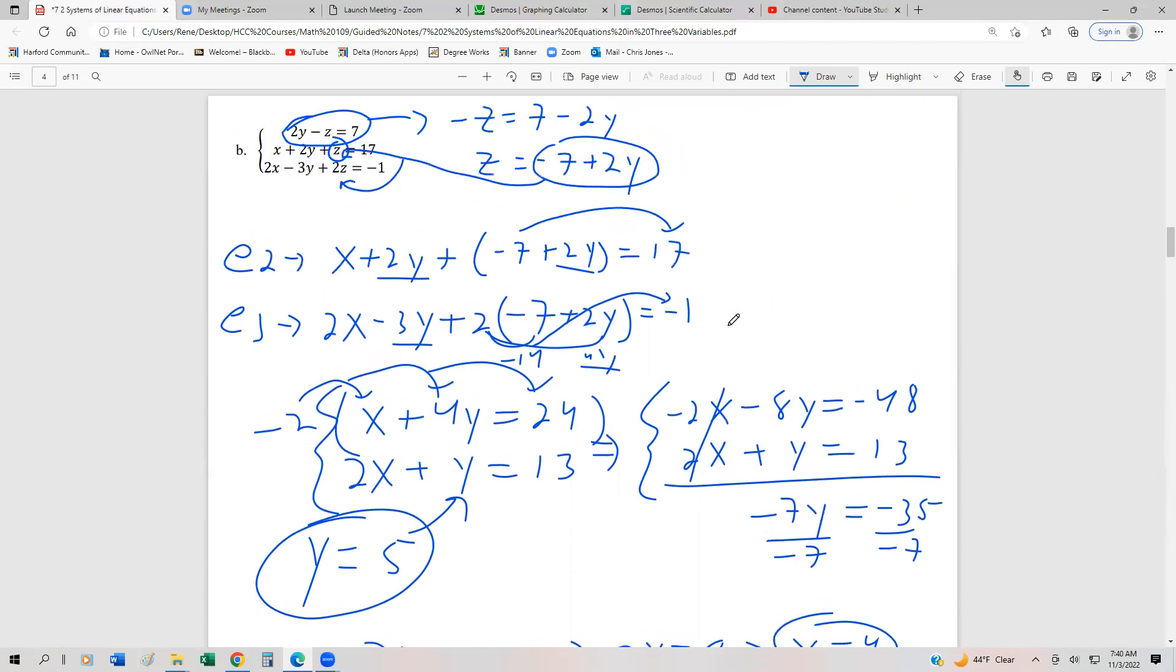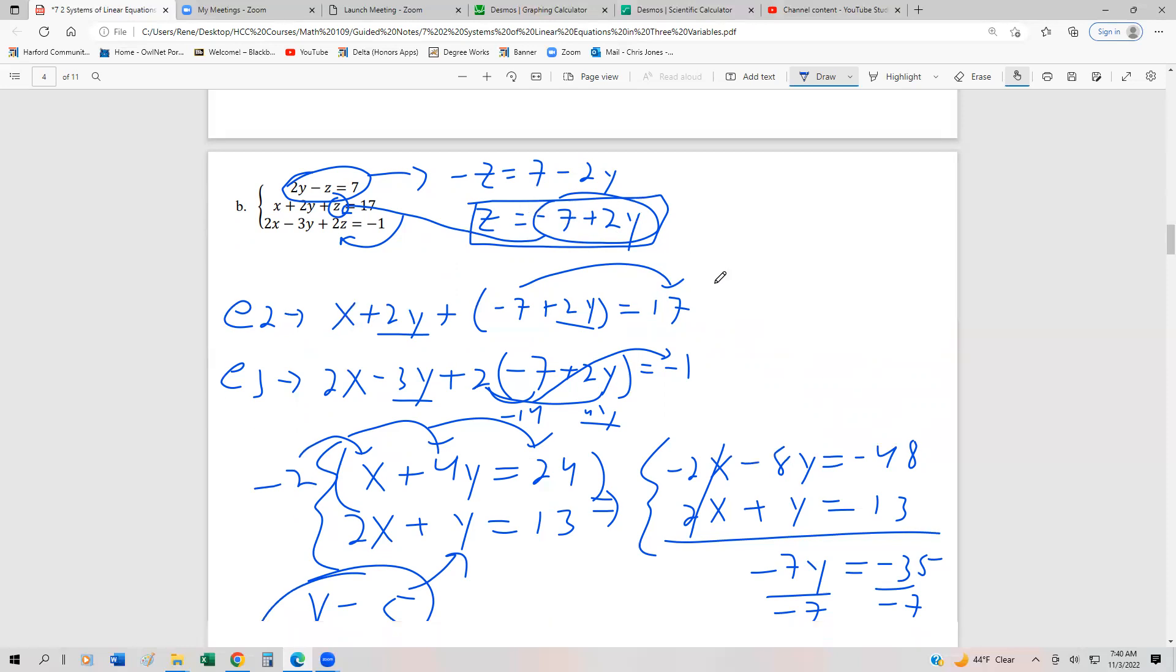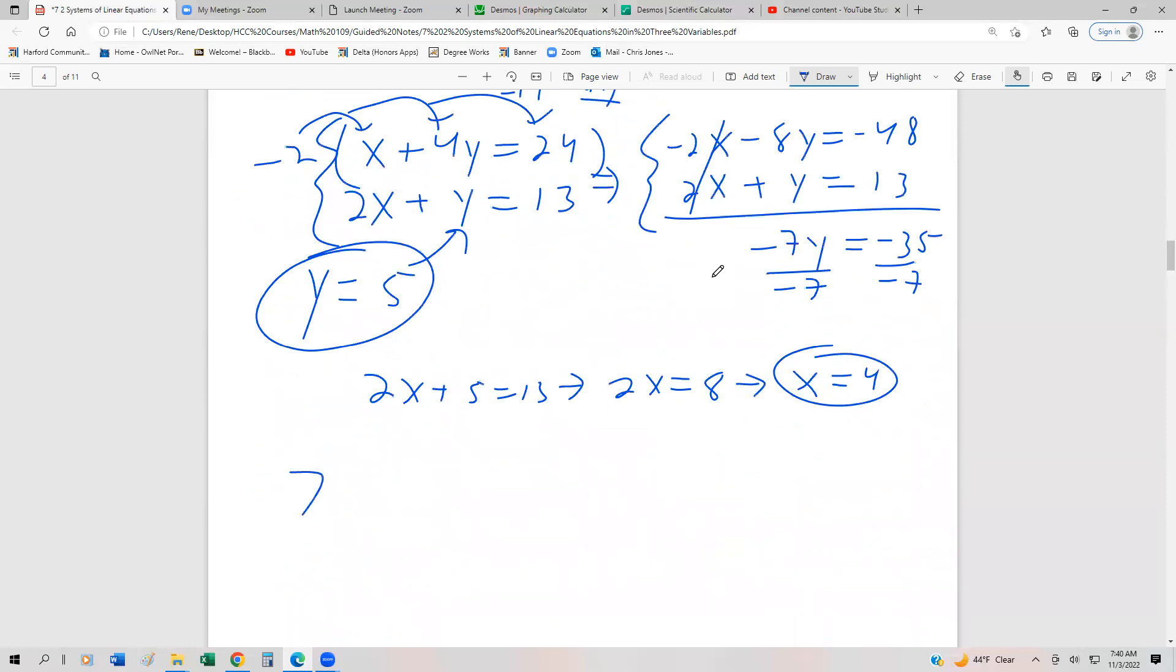Then at the very beginning, recall that we had that z was equal to negative 7 plus 2y. So we always want to go back and try to use the easiest of the substitutions. And we can certainly plug it in right here. But let's just plug it in right here because z is in terms of y. So we would have that z equals negative 7 plus 2 times 5, which is y. This becomes negative 7 plus 10, and so z is going to be 3 for us.